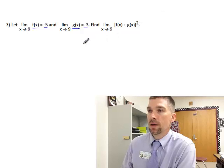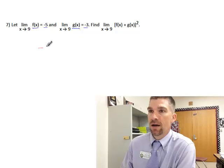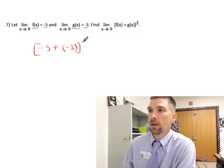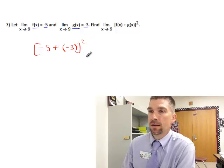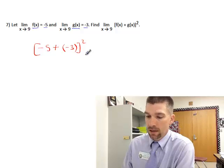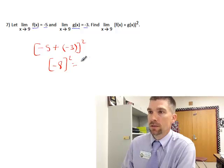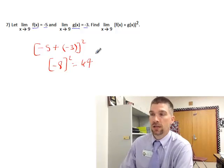All we need to know is what f(x) equals, which is -5, plus what g(x) equals, which is -3. Then we're going to square all of that. So -5 minus 3 is -8, squared is 64. It really is just that easy.